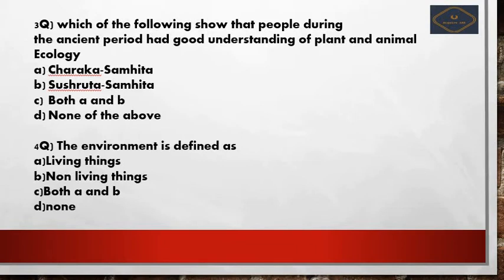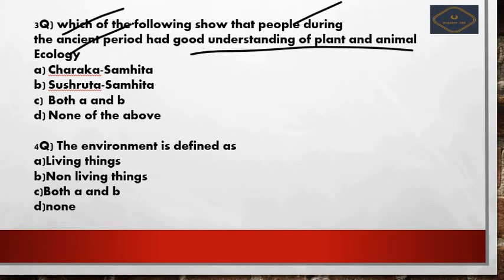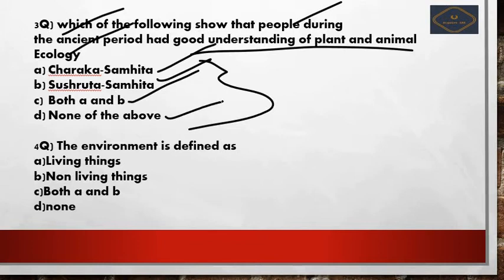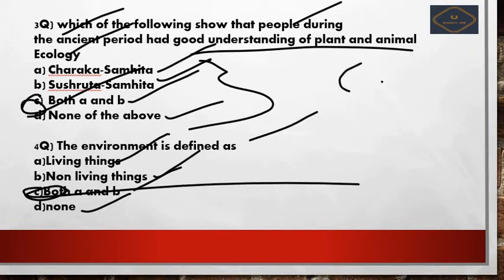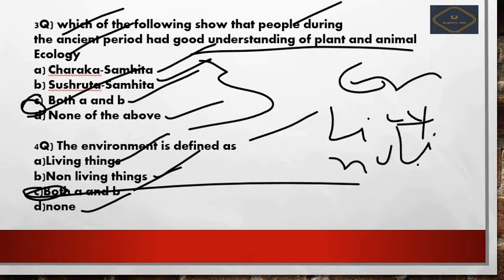Question 3: Which of the following shows that people during the ancient period had a good understanding of plant and animal ecology? Option A: Charaka Samhita. Option B: Sushruta Samhita. Option C: both A and B. Option D: none of the above. The correct answer is option C — both A and B. Question 4: The environment is defined as — A: living things, B: non-living things, C: both A and B, D: none. The right answer is C.